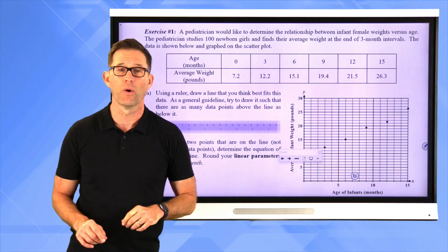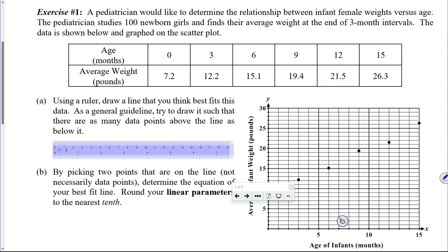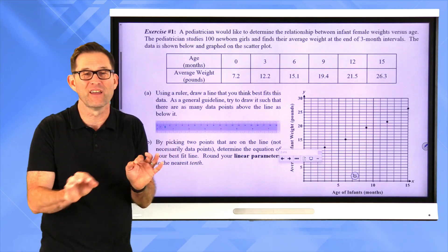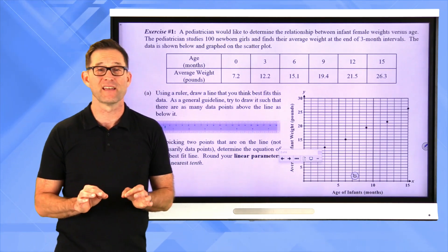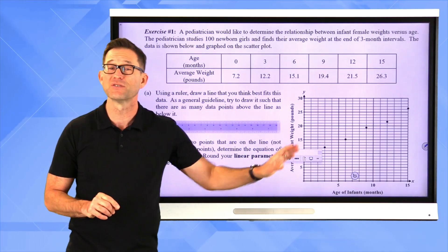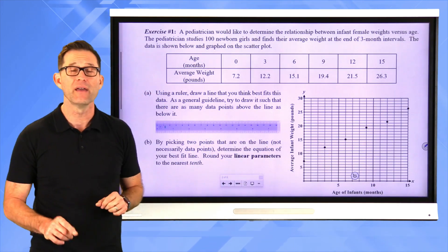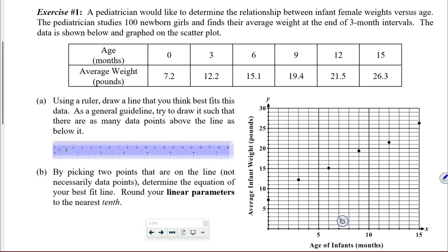Let's take a look at exercise number one. A pediatrician would like to determine the relationship between infant female weights versus age. The pediatrician studies 100 newborn girls and finds their average weight at the end of three-month intervals. The data is shown below and graphed on the scatter plot. We're not going to take time to scale a scatter plot and plot data points. We're just going to start with our scatter plot. We see a nice linear trend.